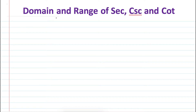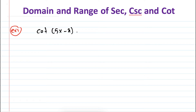So the first example we have is Example 1. Let's find the domain and range of a couple of problems for cotangent, for cosecant, and for secant. The first problem is cotangent of 5x minus π plus 8, and we are asked to find the domain and range of this function.